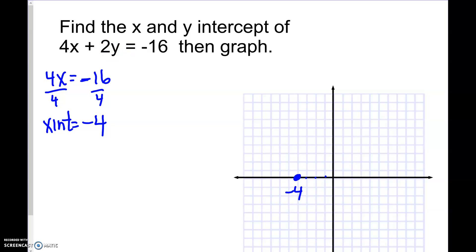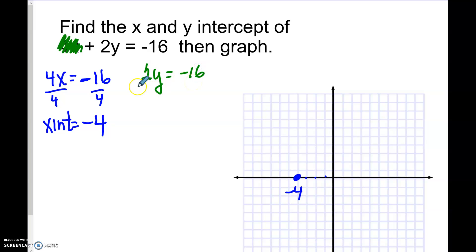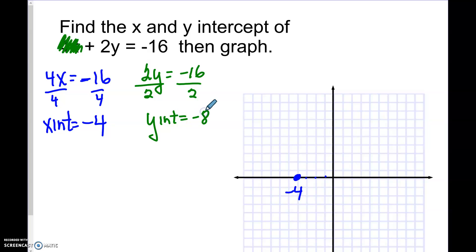Now we're looking for the y-intercept. The x value is zero, and four times zero is zero. So we're left with two y equals negative sixteen. Divide both sides by two, and the y-intercept is negative eight.